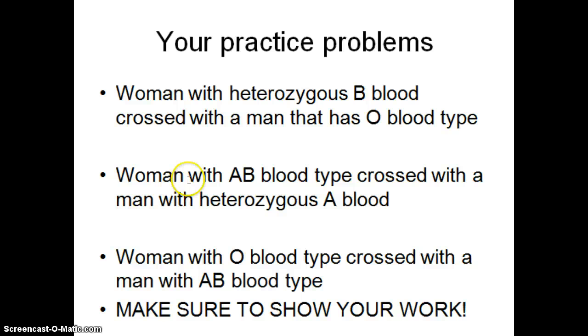So here's the practice problems. You're going to cross a woman with heterozygous B blood type with a man that has O. So a woman that has AB blood type crossed with a man that has heterozygous A. And a woman that has O blood type crossed with a man that has AB blood type. And again, just like I said in class, you need to show your work.